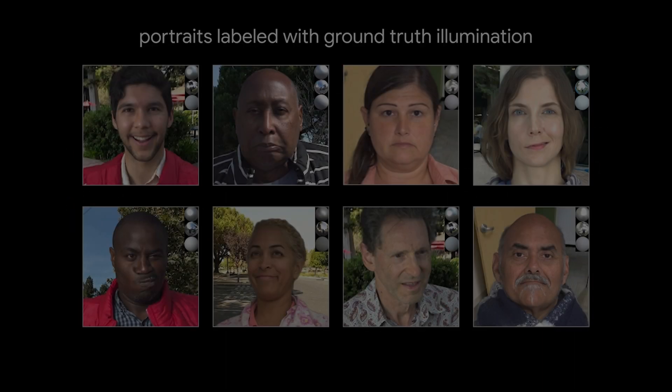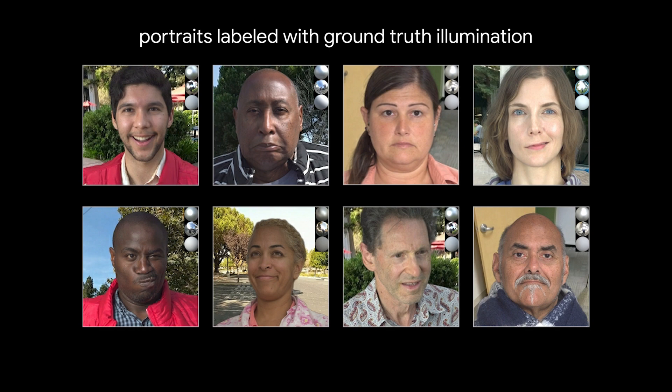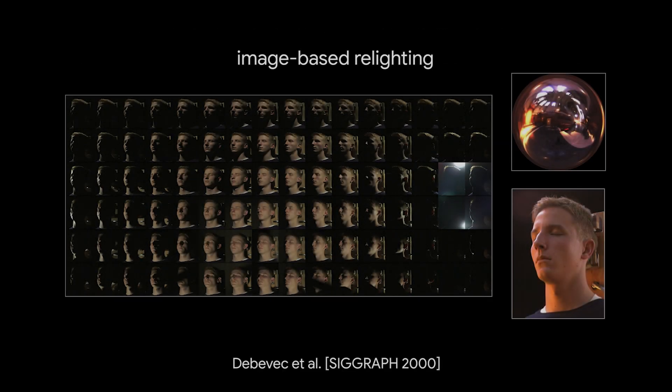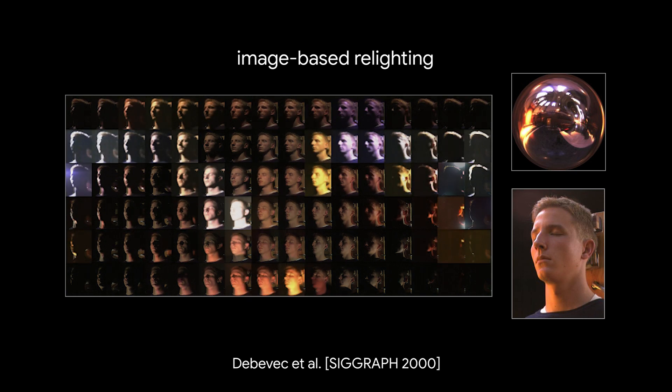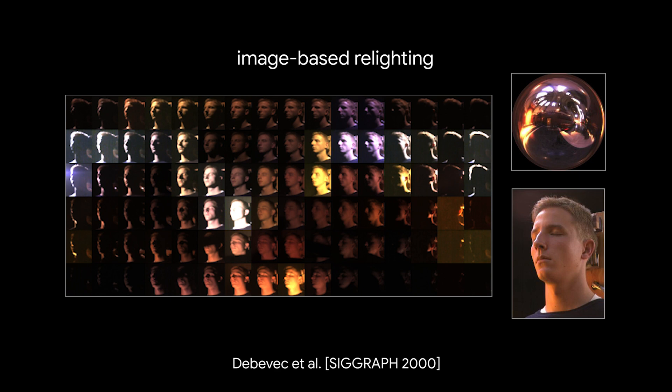To train our model, we generate portraits labeled with their ground truth illumination using image-based relighting. We photograph a subject lit one light at a time by a sphere of lighting directions, and then scale and linearly combine these images to relight the subject in a new environment.